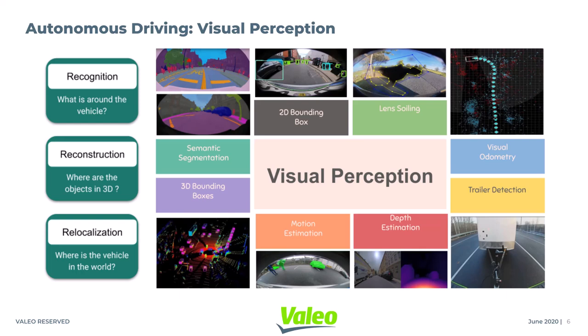Recognition is knowing what is around the vehicle and involves tasks like detection, segmentation, and lens soiling detection. Reconstruction consists of depth estimation and motion estimation to know where objects are in the world. Relocalization is knowing where the ego vehicle is in the world, and involves pose estimation and SLAM.